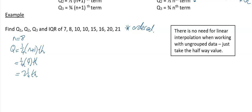Sometimes it's not necessary to find exactly the 2.25th value — it's good enough just to find halfway between the second and third values. My second value is 8 and my third value is 10, so Q1 = (8 + 10) ÷ 2 = 9.